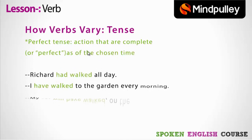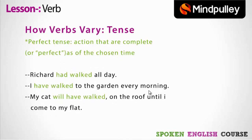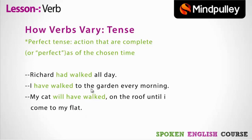Perfect tense covers actions that are complete or perfect as of the chosen time. 'Richard had walked all day' — 'had walked' is past perfect tense. 'I have walked to the garden every morning' — 'have walked' is present perfect tense. 'My cat will have walked on the roof until I come to my flat' — 'will have walked' is future perfect tense. So verb changes according to the tense.